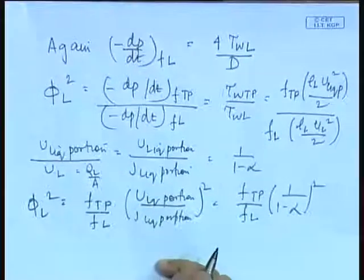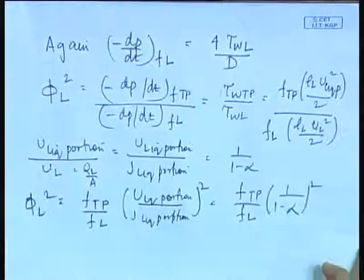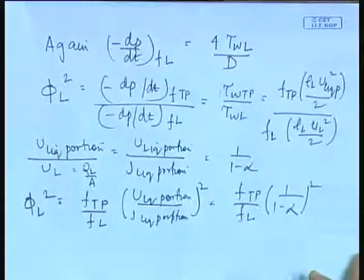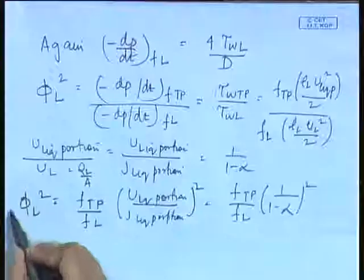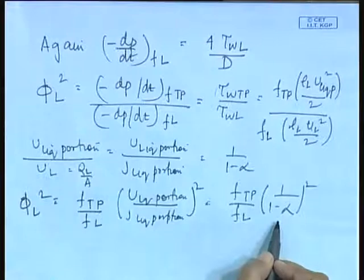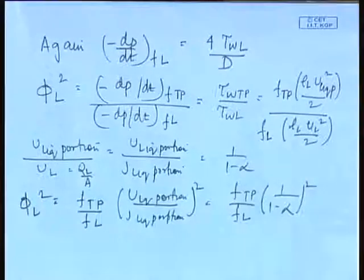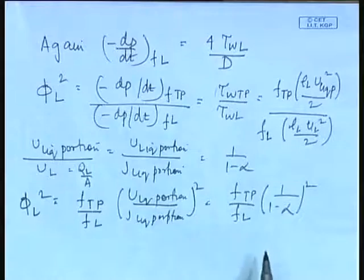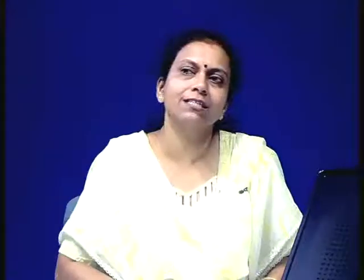We have a small portion of this derivation left, which will be continued in the next class. We will complete the derivation of φ_l² for the actual annular flow situation, compare it with the separated flow model result, and then proceed to further refinements of the model and other correlations. Thank you very much.